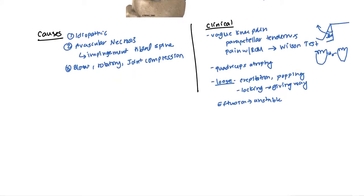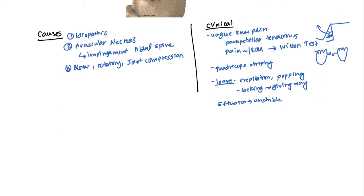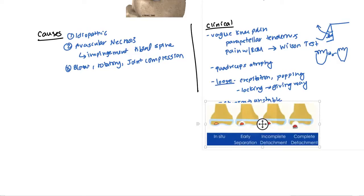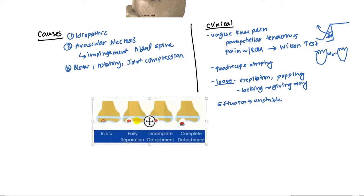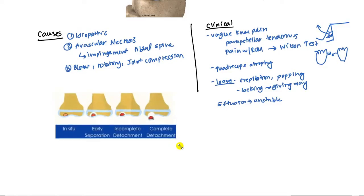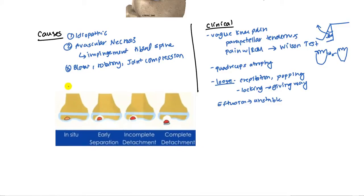Let's talk about the different classifications. This diagram shows all the various stages. Stage one is in situ - compressible when you push on it during keyhole surgery. These can only be seen with keyhole surgeries, very tough to find in x-rays.